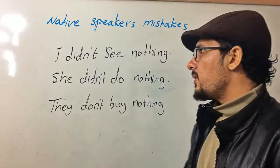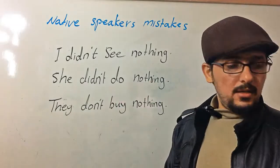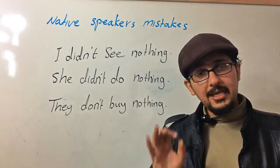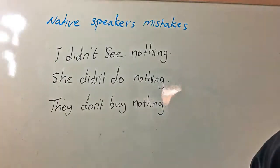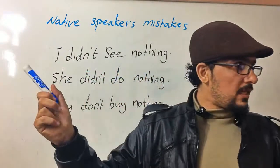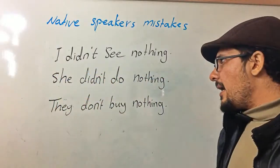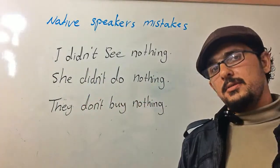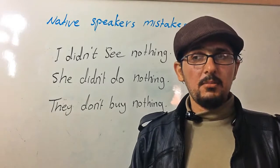The first one: when I say 'I didn't see nothing,' that means I saw something. When you have a double negative, it becomes affirmative. So 'I didn't see nothing' means I saw something. 'She didn't do nothing' means she did something. 'They don't buy nothing' means they bought something.